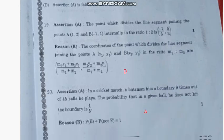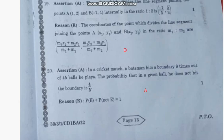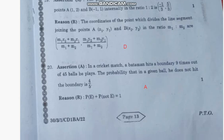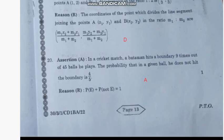Question number 20: Assertion A: In a cricket match, a batsman hits the boundary 9 times out of 45 balls he played. The probability that in a given ball he does not hit a boundary is 4/5. Reason R: Probability of an event plus probability of not an event equals 1. The correct answer is option A: Both A and R are true, and R is the correct explanation of A. Thank you.